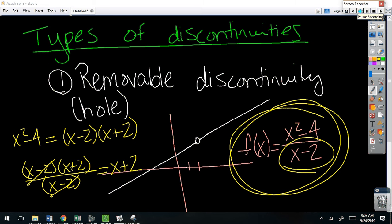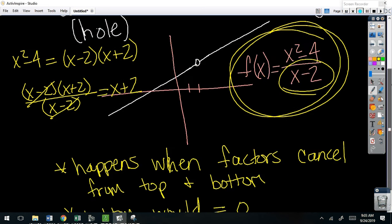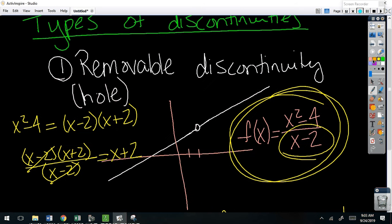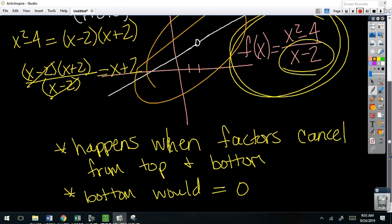So this is another one of those examples where graphically, you need to be able to identify, hey, this has a removable discontinuity. It's got a hole in it. But algebraically, also, I can see why it has a hole there. Does that make sense? Remember, your calculator's not going to show that up. You're going to have to be intuitive.